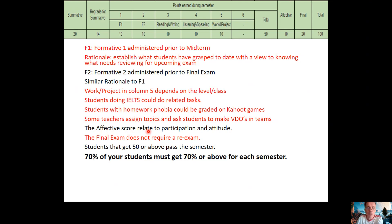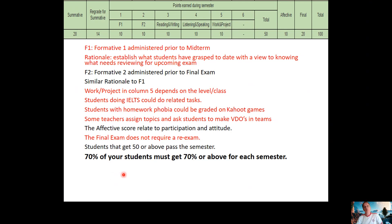The effective score is related to participation and attitude — again, that's very subjective. The final exam does not require a re-exam. Students that get 50 or above pass the semester. Many students are very eager to get at least 80 because that is Grade 4. The school really wants 70 percent of students to get 70 percent or above for each semester, so ideally 70 percent of your students should have 70, 75, 80, up to 100.